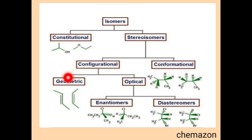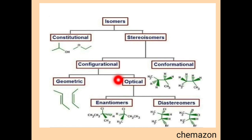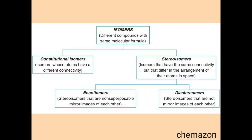Configurations are again of two types: geometric isomers and optical isomers, which we will see in detail in further slides. Optical isomers are of two types: enantiomers and diastereomers. Now let us understand in much more detail what all these terms mean.